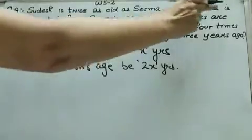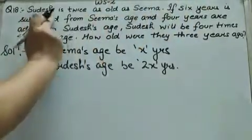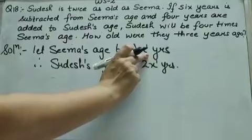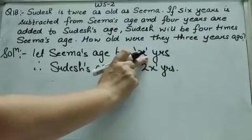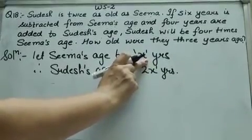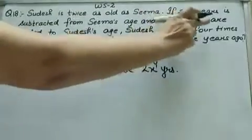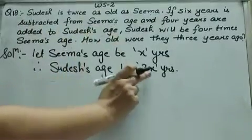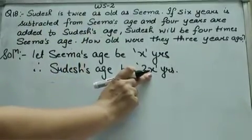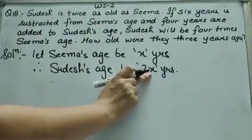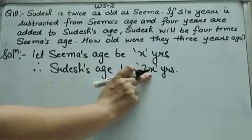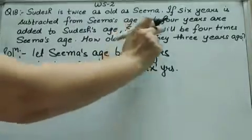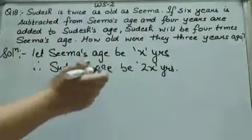If 6 years is subtracted from Sima's age, and 4 years are added to Sudesh's age — making Sudesh's age 2X plus 4 — Sudesh will be 4 times Sima's age.